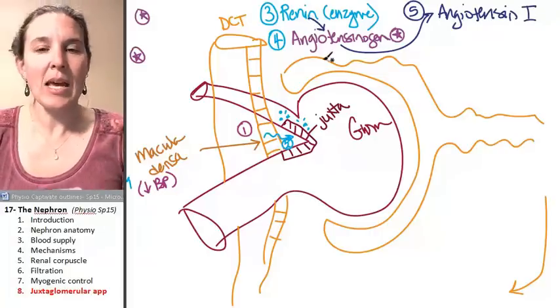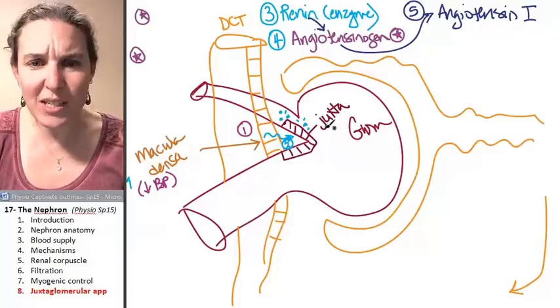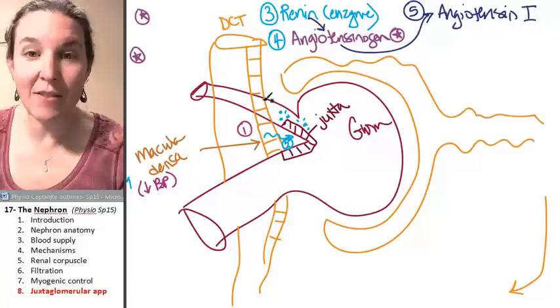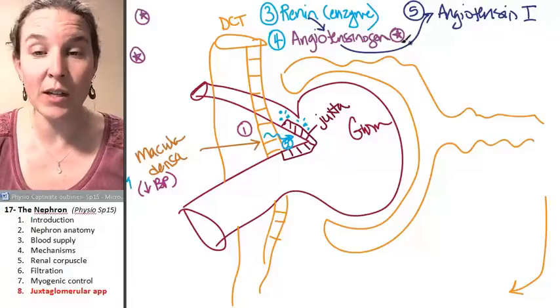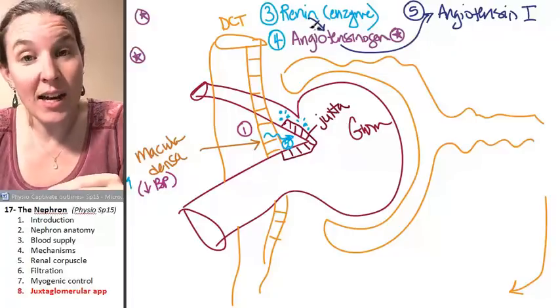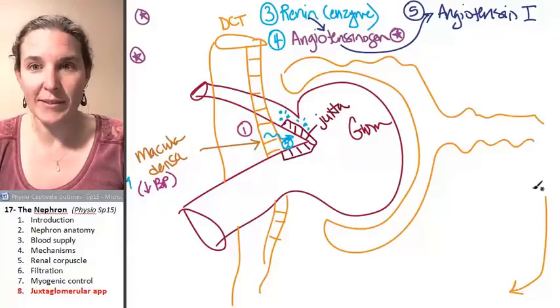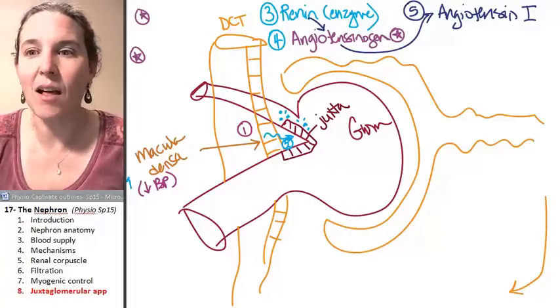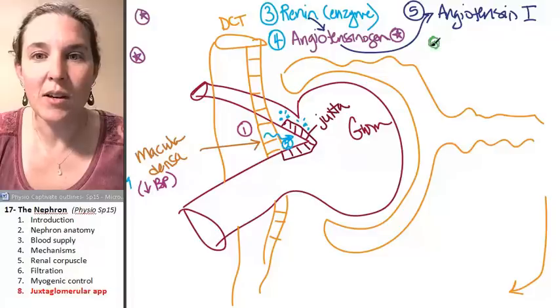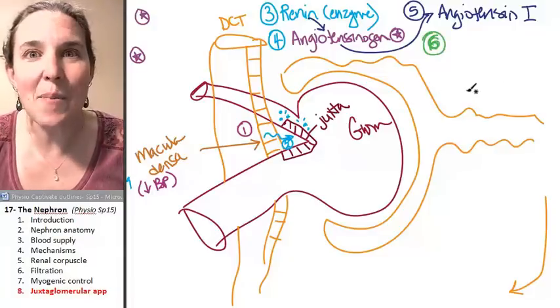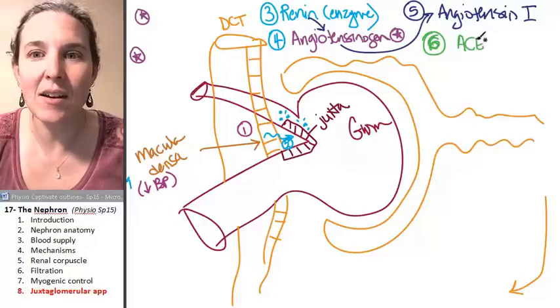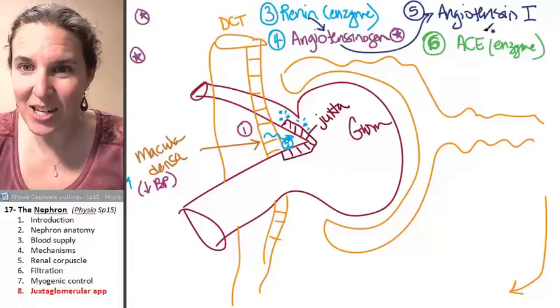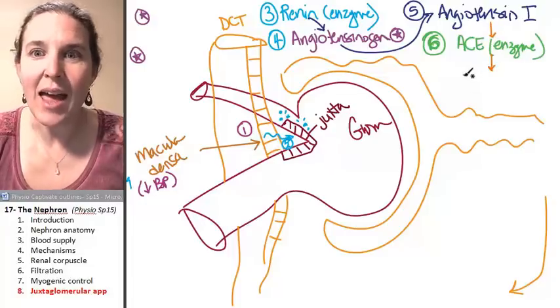Renin is the enzyme. It gets produced because of low blood pressure. It gets produced in the glomerulus and dumped into the blood. Renin goes out and finds angiotensinogen, which is just a plasma protein already floating in the blood. Angiotensinogen, when in contact with renin, gets turned into angiotensin I. Angiotensin I does nothing. It floats around and continues to float around in the blood until it comes in contact with an enzyme called ACE. ACE turns angiotensin I into angiotensin II.